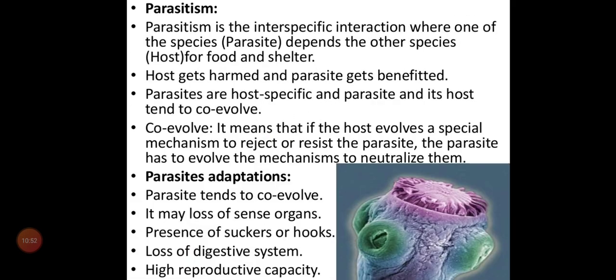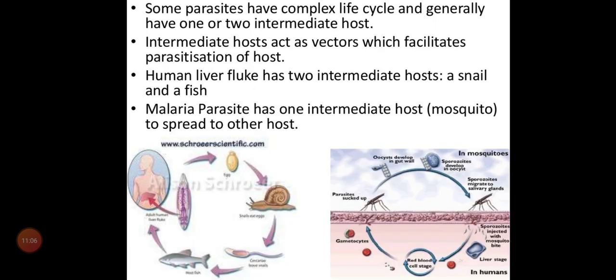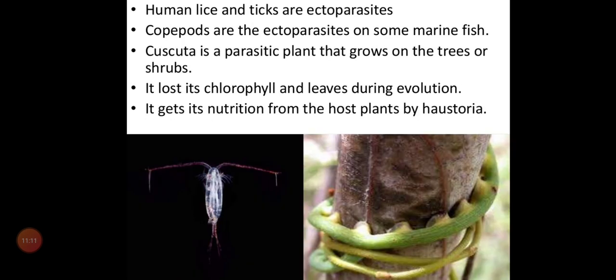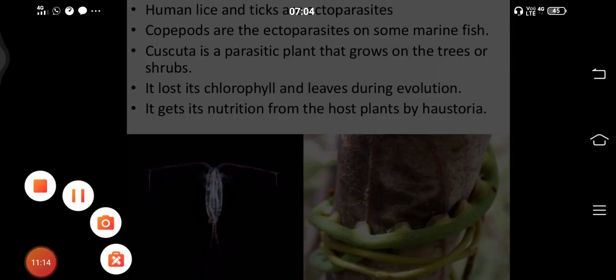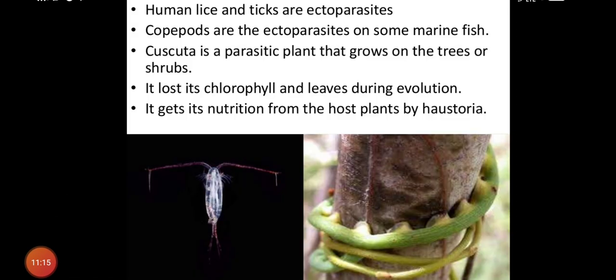To summarize parasitism: it is always interspecific. We saw the characteristics of parasitism, examples in both plants and animals, and that parasites may need two or three hosts to complete their life cycle. Next class we'll see the next topic.